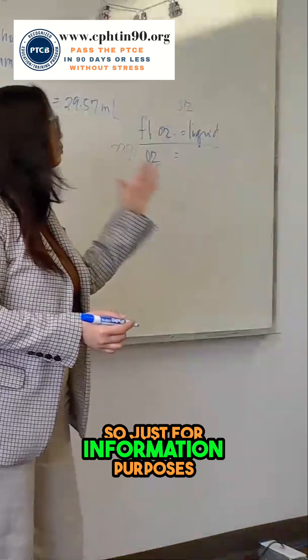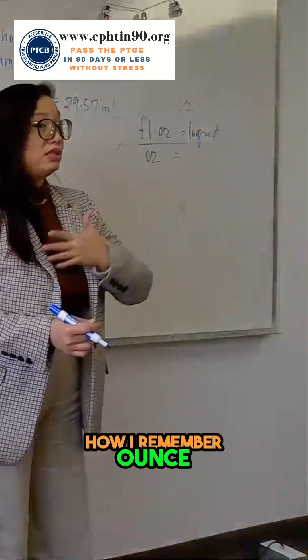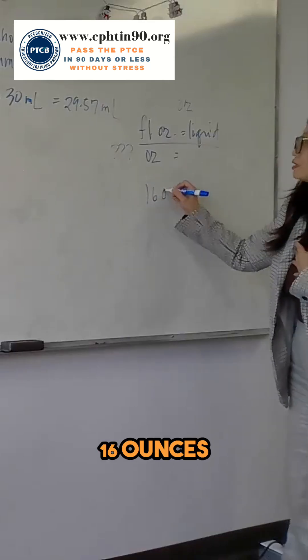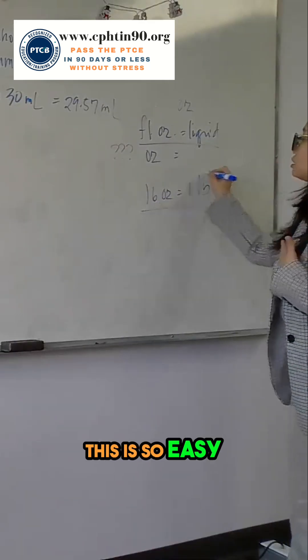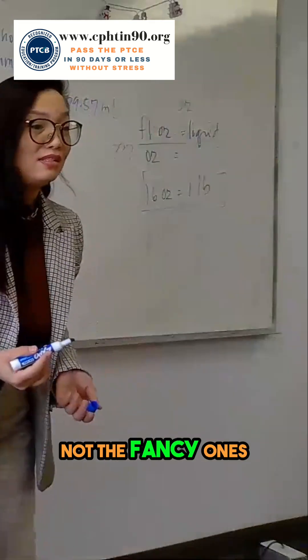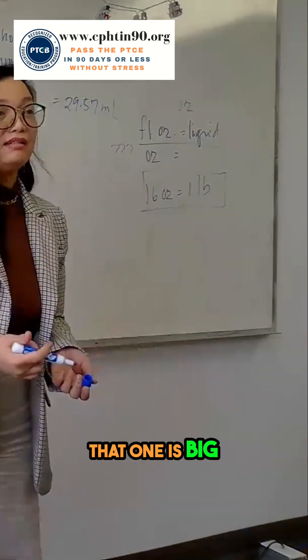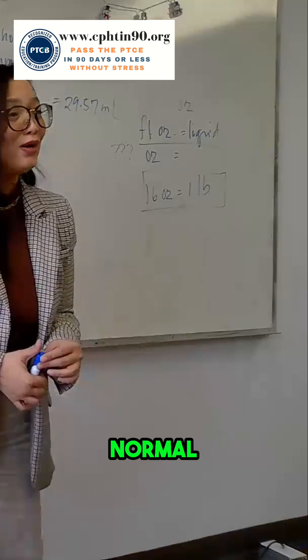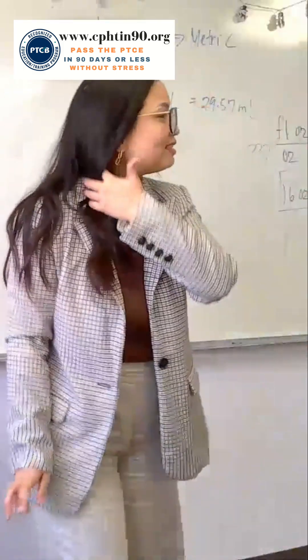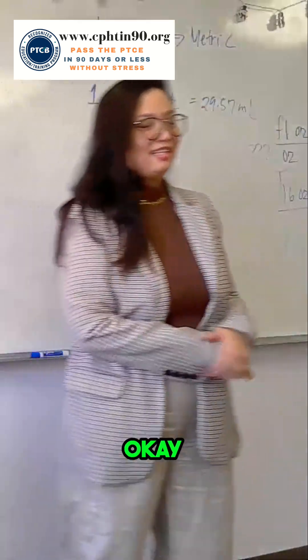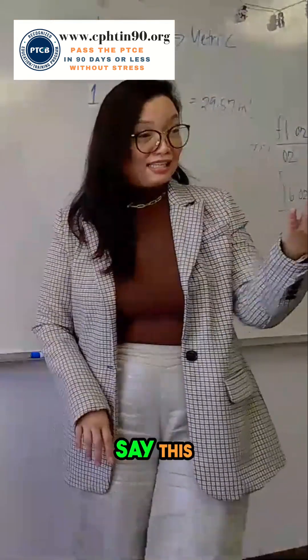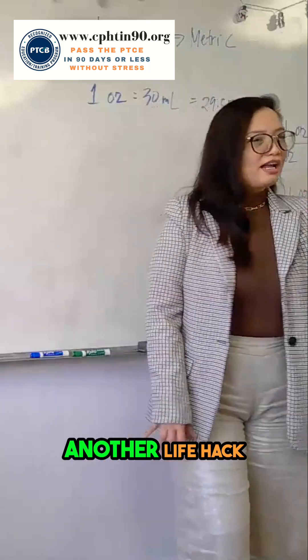So just for information purposes, how I remember ounce in weight or mass is 16 ounces is 1 pound. This is so easy for me to remember, like a water bottle. Not the fancy ones, that one is big, right? Normal, not bougie ones. So 16 ounces is 1 pound, and I always say this, another life hack.